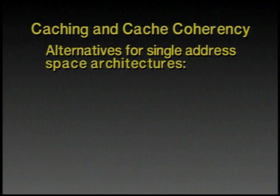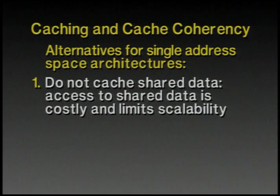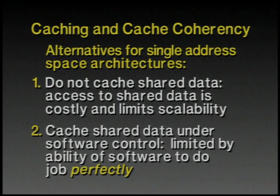Returning to caching and cache coherency: there are several alternatives in a single address space. One approach is to not cache shared data, which makes accesses to remote data very expensive. A second alternative is to cache shared data under software control — but software must be conservative when it cannot be certain that a cached copy retains a consistent memory model, so it must use the remote copy instead. This conservatism becomes a limiting factor in trying to cache in software.